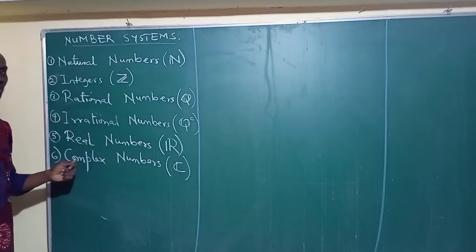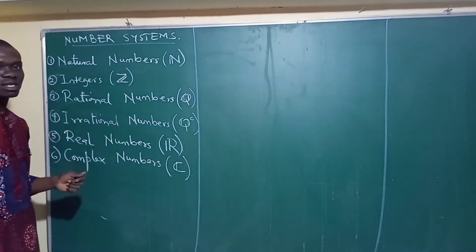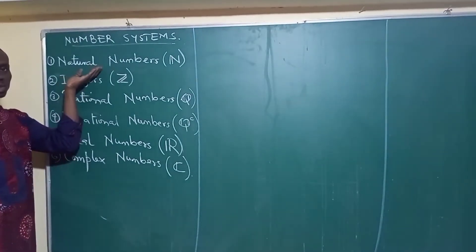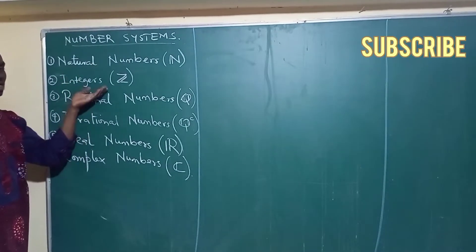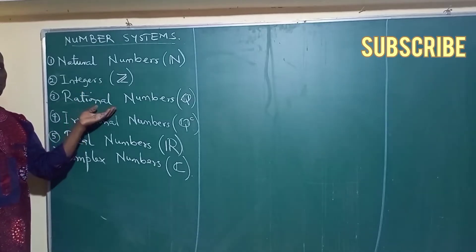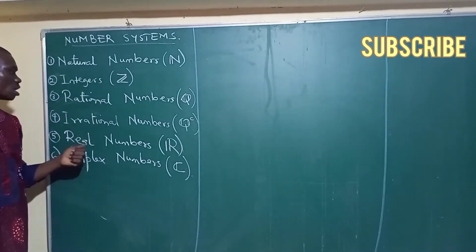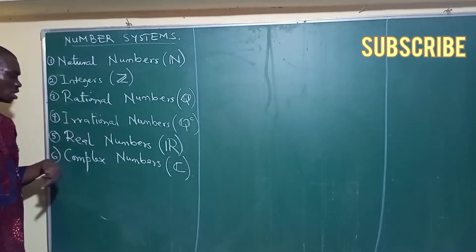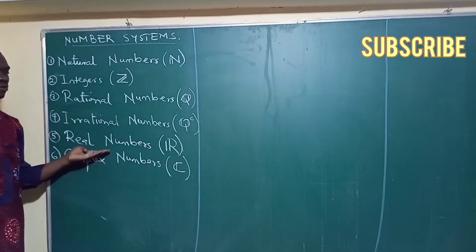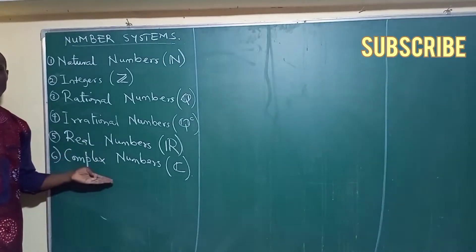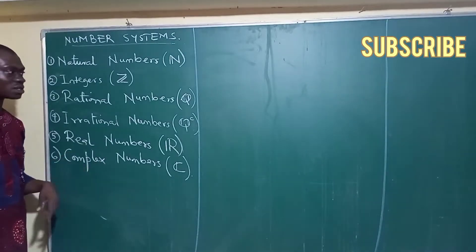We already have them listed on the board. We have the natural numbers, we have the integers, we have the rational numbers, we have the irrational numbers, we have the real numbers, and we have the complex numbers.